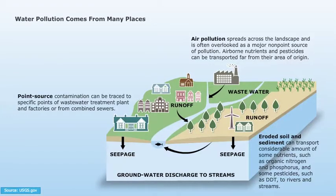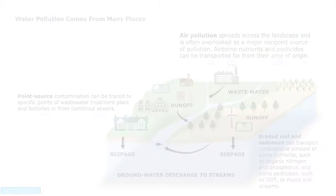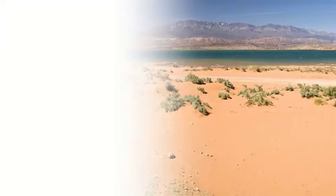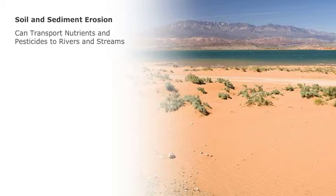Pollution into our local waters comes from many places. It can come from air pollution, which spreads across a landscape and is often overlooked as a major nonpoint source of pollution. Airborne nutrients and pesticides can be transported far from their area of origin. Pollution to our stormwater can also come from erosion — eroded soil and sediment — which can transport considerable amounts of nutrients such as organic nitrogen and phosphorus.